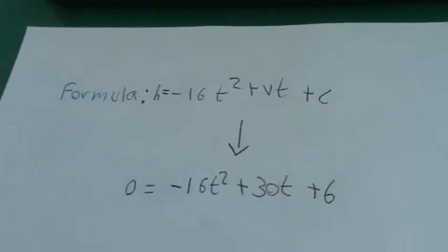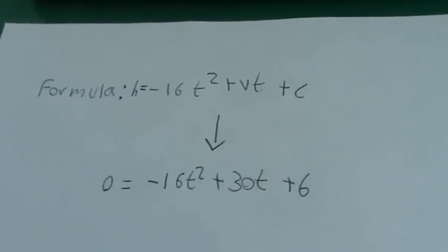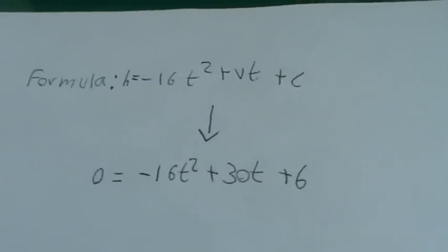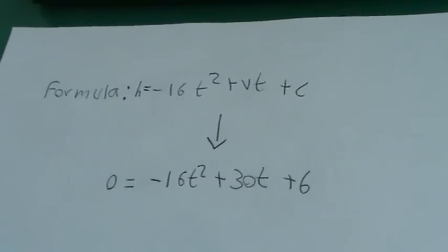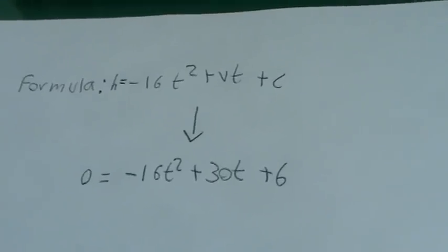After you plug in the variables for height, velocity, and c, you get 0 = -16t² + 30t + 6.